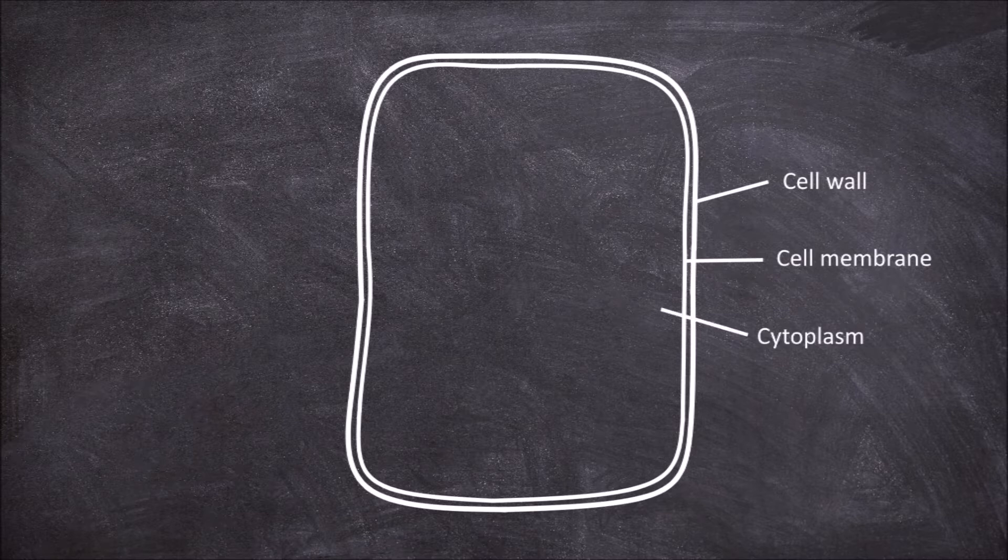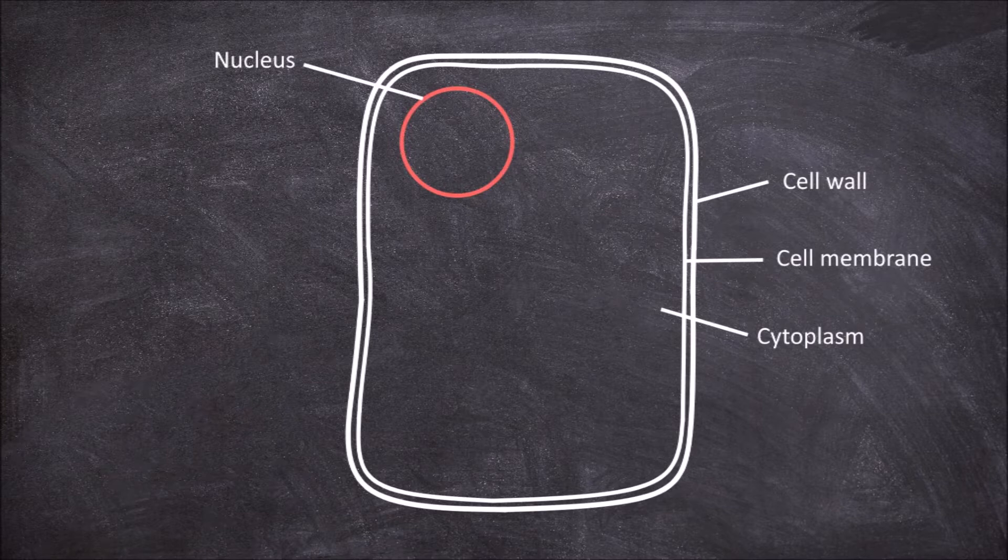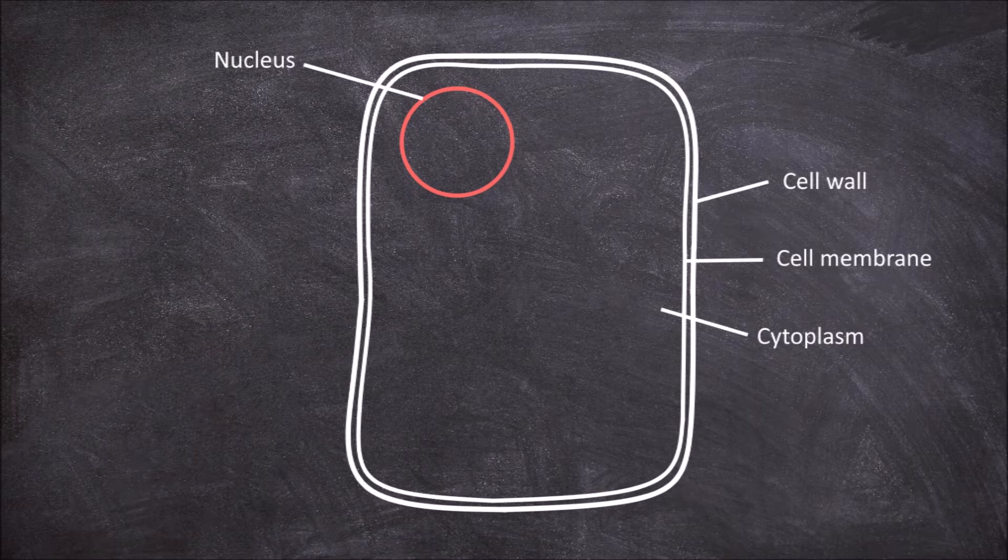The rest of the organelles within the cell are suspended in the cytoplasm. The first organelle is the nucleus, which houses the genetic material of the cell. The nucleus has a membrane called the nuclear envelope.